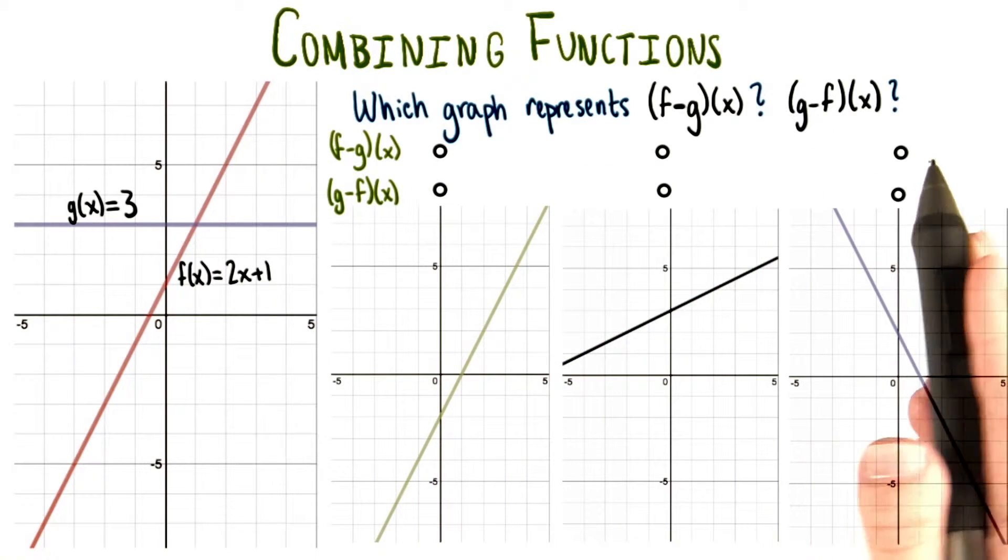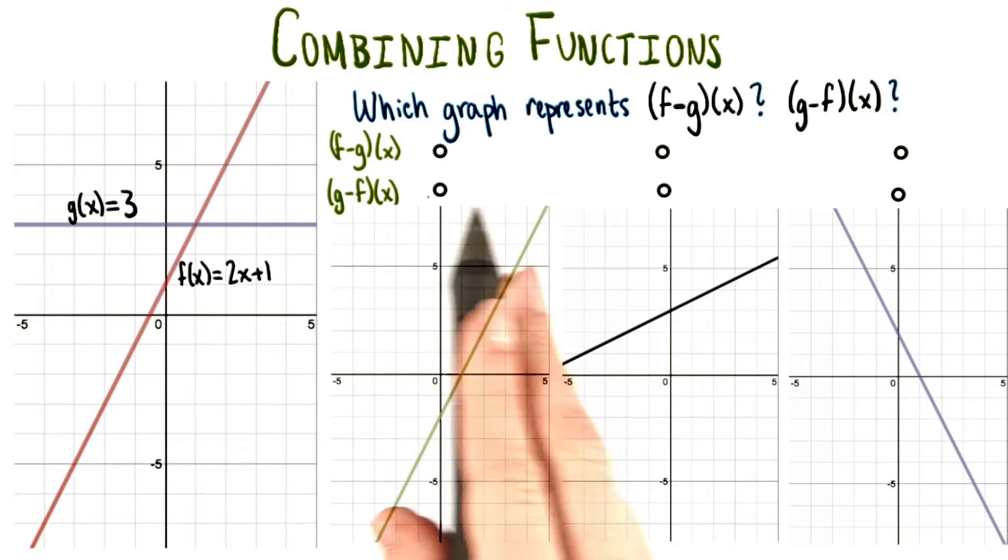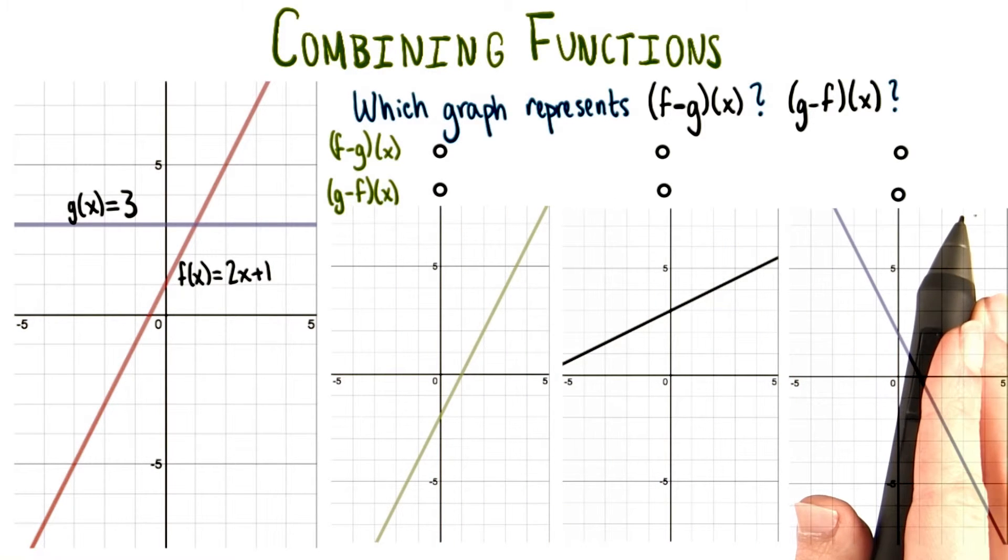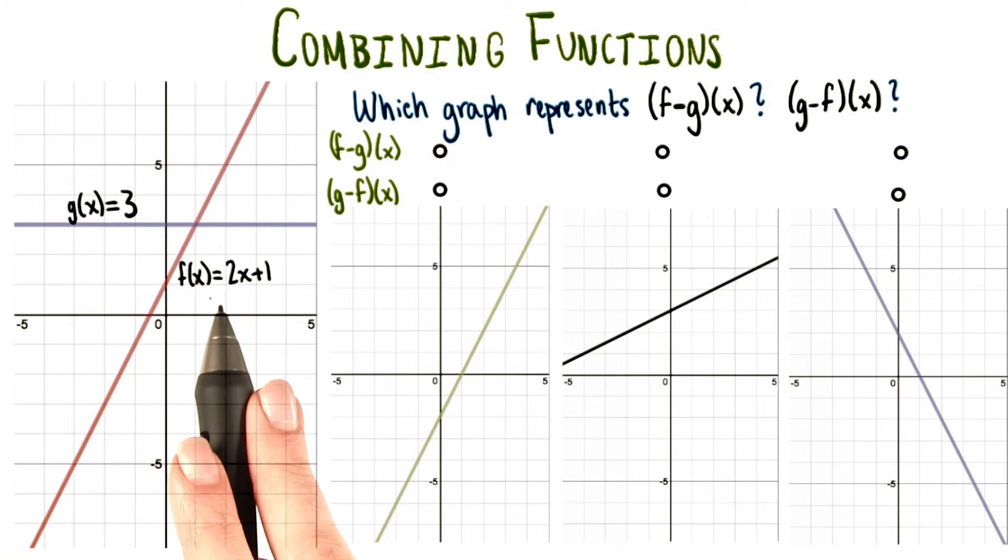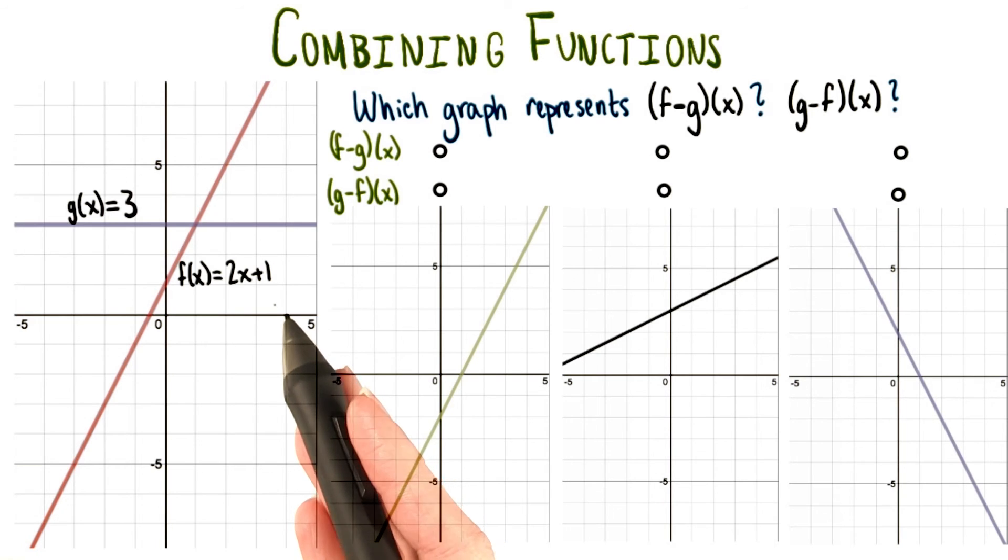In this top row of bubbles, please select f minus g. And in the bottom row, please pick which one is g minus f. I'm going to keep the functions written here for you. I'd recommend thinking about this graphically, but if you need to work with the equations of the functions and combine them mathematically first before you pick the graphs, that's also totally fine.